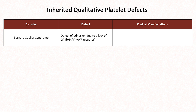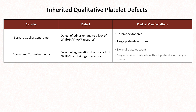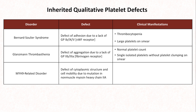Glanzmann thrombasthenia is due to a defect of aggregation on account of a lack of GP2B3A, also known as the fibrinogen receptor. MYH9-related disorder is caused by a defect in the MYH9 gene that encodes a non-muscle myosin heavy chain, resulting in a defect of the cytoplasmic structure and cell mobility of platelets. In addition to giant platelets, a blood smear can also reveal something called Döhle-like bodies within granulocytes.